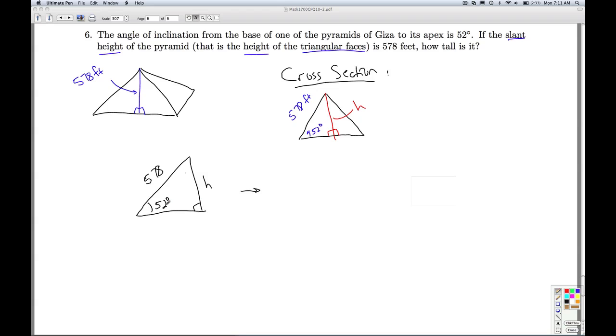Which trig function can I use to relate these pieces of information? I have an angle, I'm looking for the length of the side opposite of that angle, and I have the length of the hypotenuse. So, I can use the sine function.